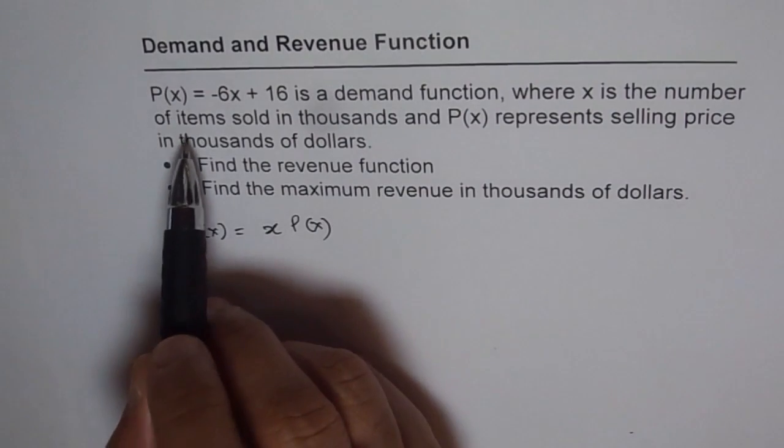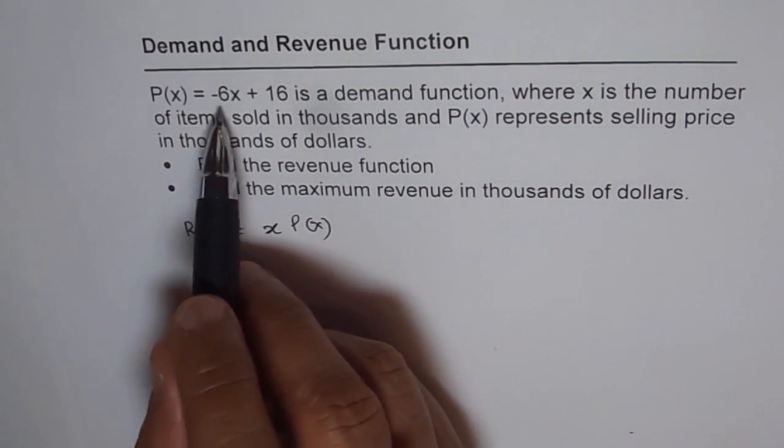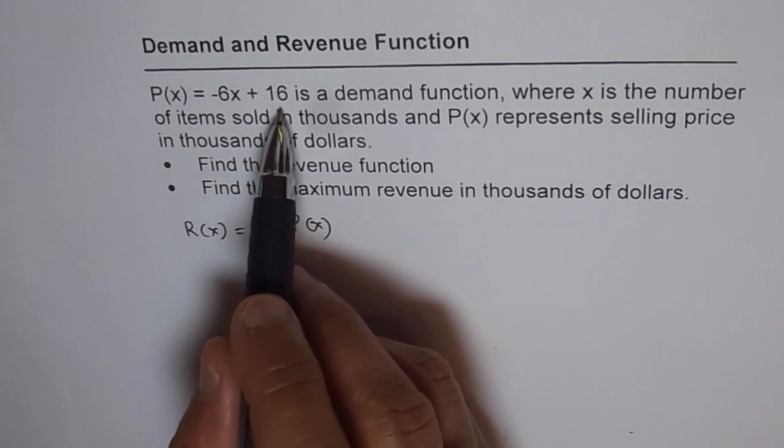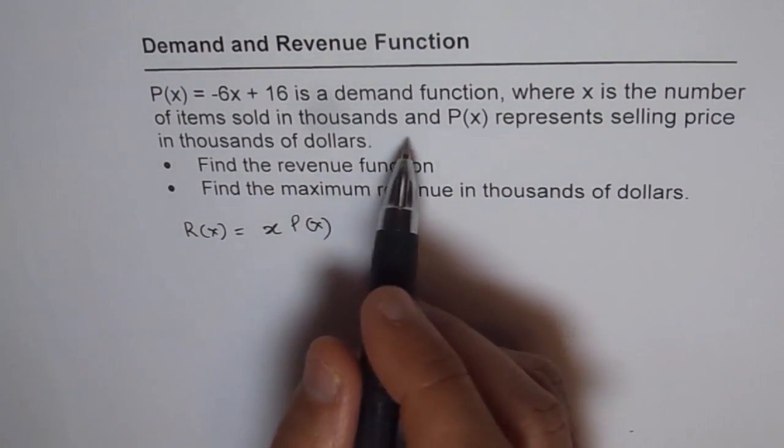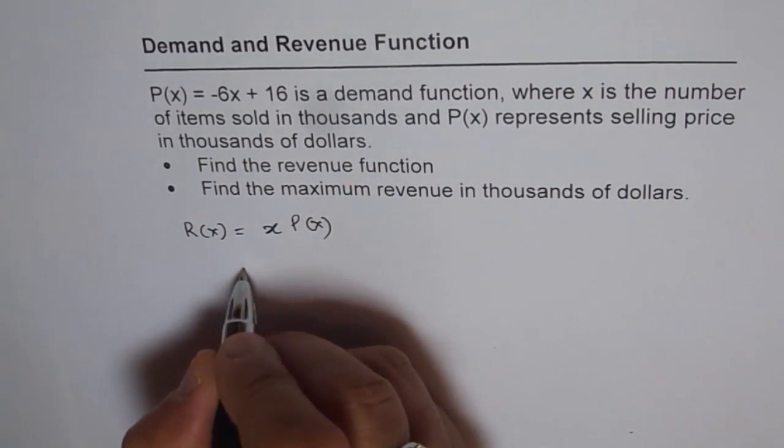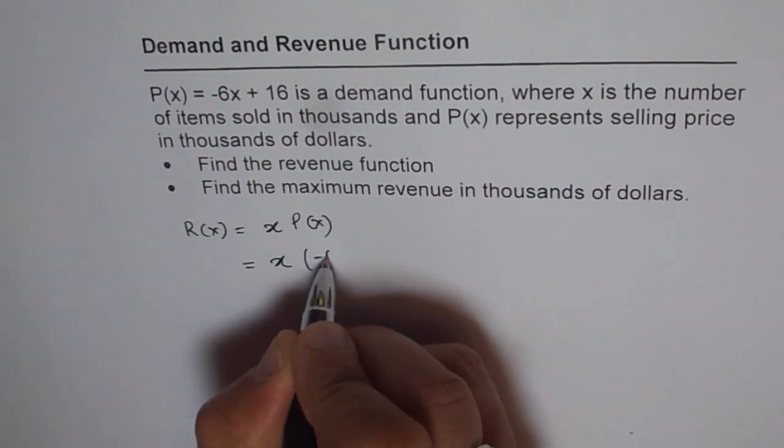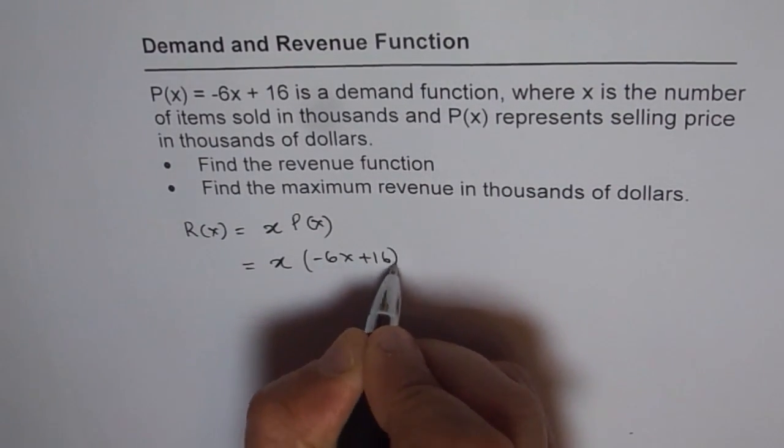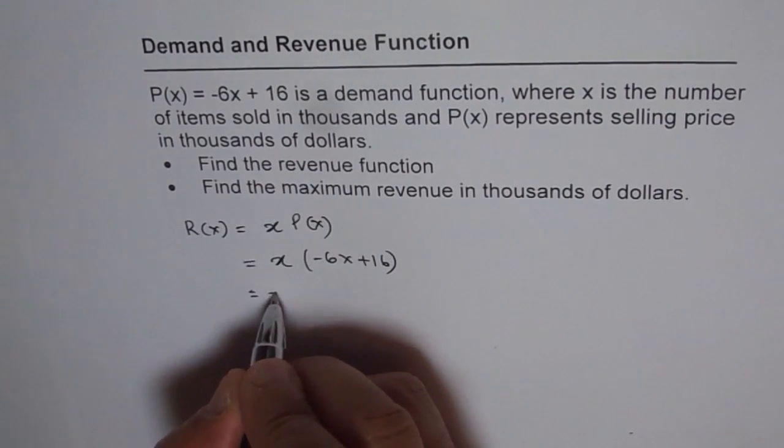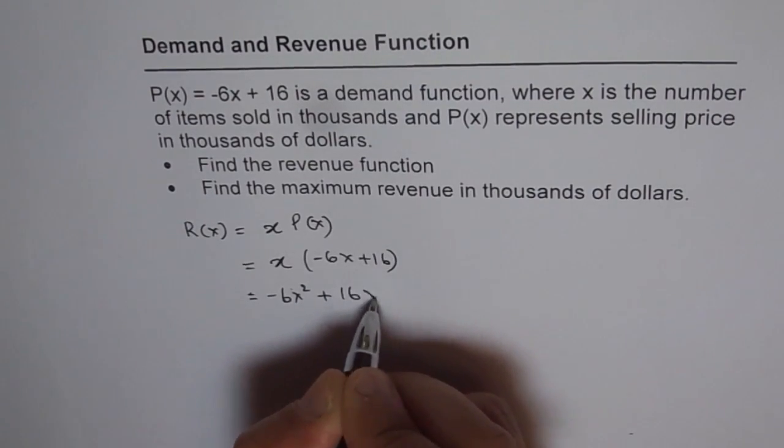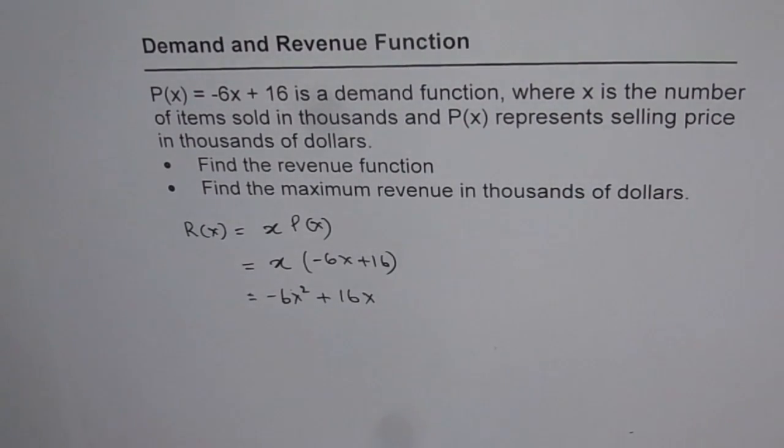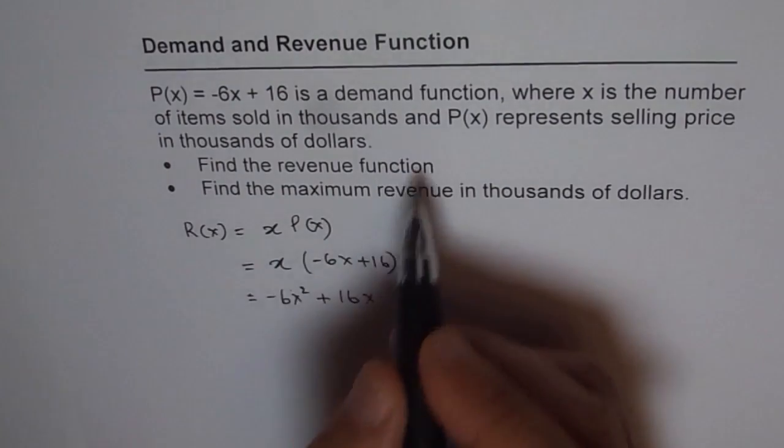Here we are given the demand function is -6x + 16, and the revenue is based on x, where x is the number of thousands of pieces. So we can write this as x times (-6x + 16), which could be written as -6x² + 16x. That becomes the revenue function. That is part A.